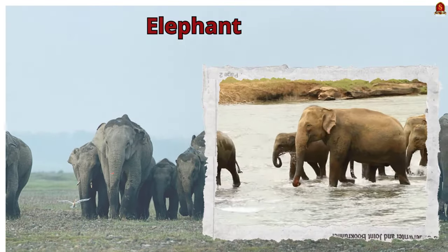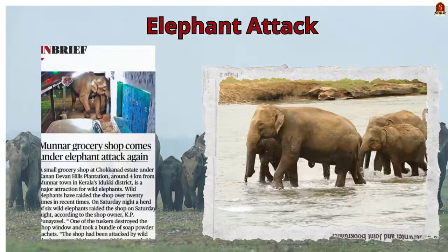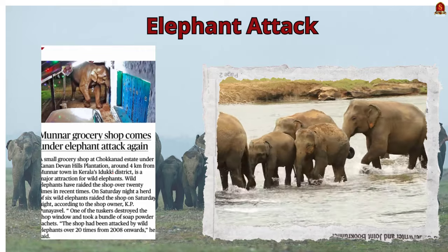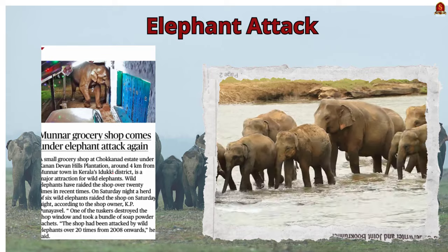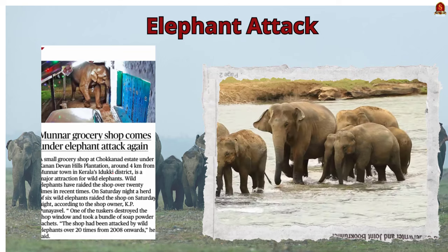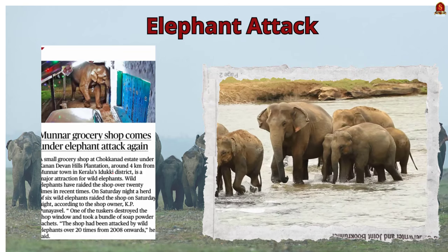A small grocery shop near Munnar in Kerala has been repeatedly raided by wild elephants. According to the shop owner, the shop has faced over 20 elephant attacks since 2008. Most recently, a herd of six elephants raided the shop on Saturday night, with one tusker breaking a window to steal commodities. This is a typical example of man-animal conflict, and we can see them increasing day by day. Since we have discussed man-animal conflict in detail in previous videos, let's explore other dimensions.